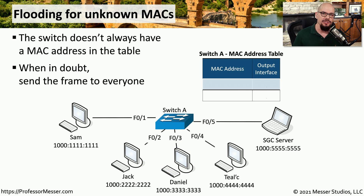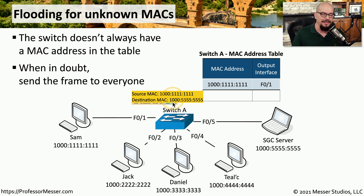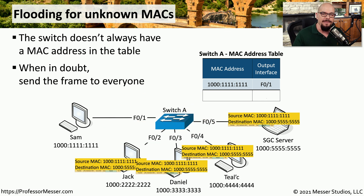In that previous example, we were sending information to the SGC server, but the SGC server's MAC address was not yet in the switch. If the switch does not have an entry for that MAC address in the table, it will send that information to everyone on the network. The MAC address table gets updated with Sam's source MAC address, associated with FastEthernet 0/1. But since the destination MAC address is not listed, the switch floods that traffic to all other interfaces on the switch.